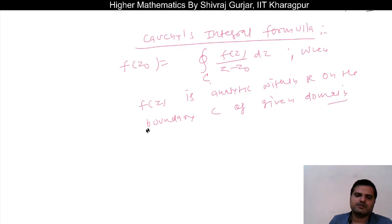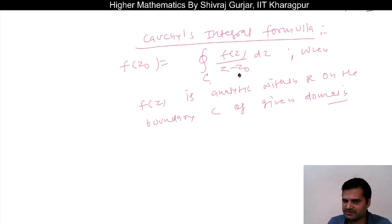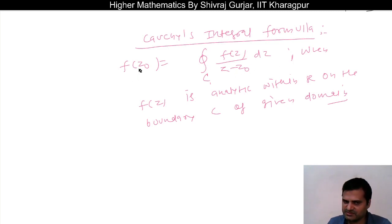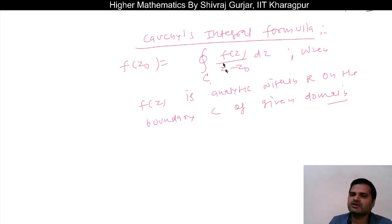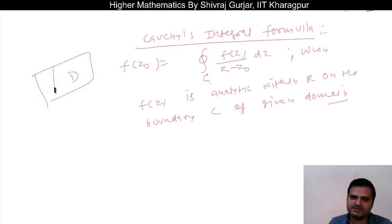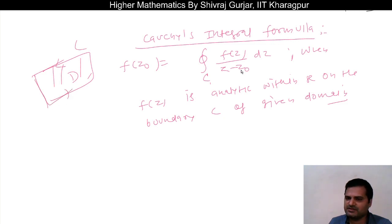Basically, this integration value — the integral of f(z) divided by (z minus z₀) dz — will equal f(z) at z equals z₀, provided f(z) is analytic in this domain as well as on the boundary of this domain. This proof is very easy.